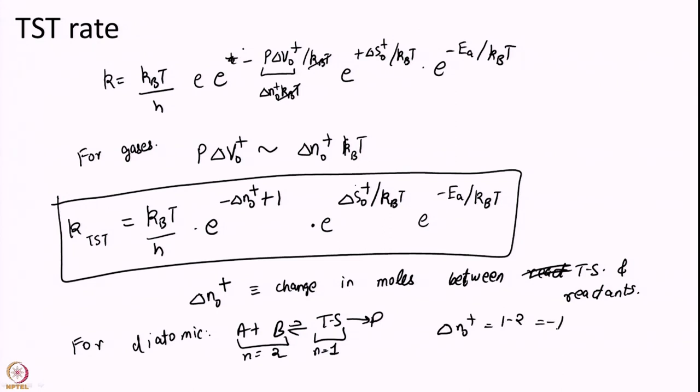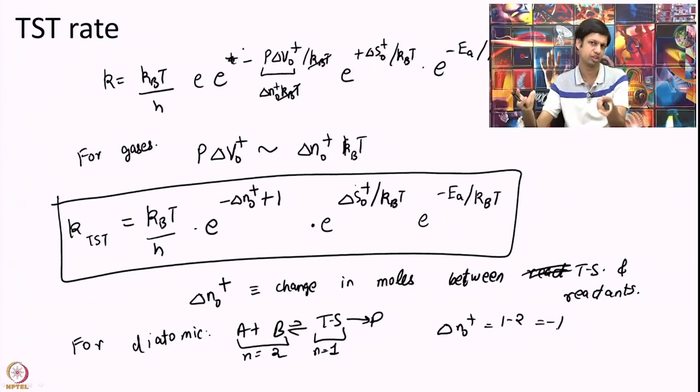So, for monoatomic similarly delta N naught will be 0 because you have 1 reactant and 1 transition state 1 mole of each right. So, depending on what your how much reactant number of reactants are you can calculate this delta N naught. So, this is usually trivial delta N naught. The harder part is delta S naught and Ea.